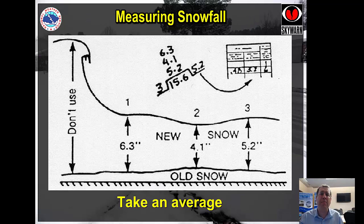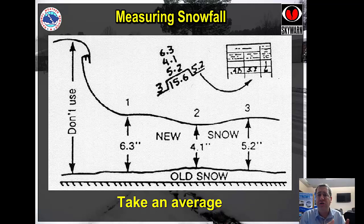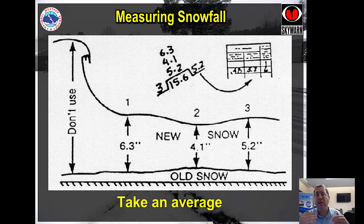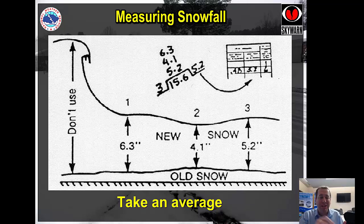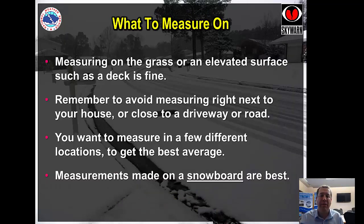Speaking about precision, we like you to take an average of the snowfall. On this example, don't measure in a drift — don't measure at the end of your driveway where the plow has pushed snow into your yard. If you see spots that are obviously higher because of wind, don't measure there. Take a couple of measurements. You don't need long division, just a couple of measurements to get a good average — that's what we're looking for.